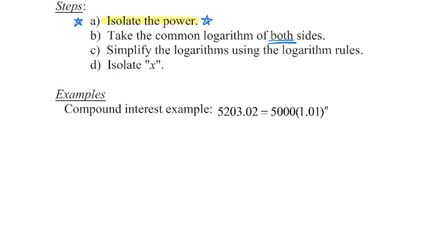Because I'm multiplying by 5,000, I'm going to do the opposite, which is division. So the first thing we need to do is divide out that 5,000 to get the power by itself. Remember, what I do to one side I have to do to the other side. In your calculator you're going to keep that value of 1.0406, etc., which is equal to 1.01.